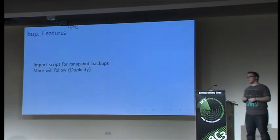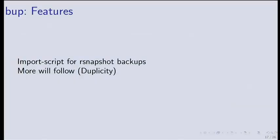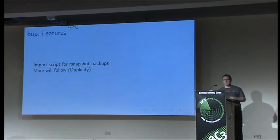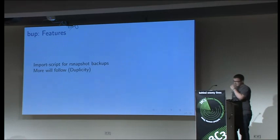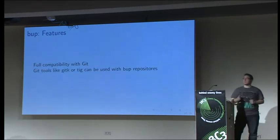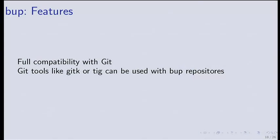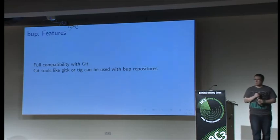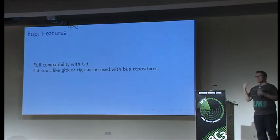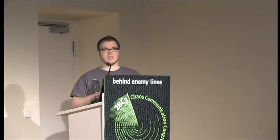We have an import script for rsnapshot. If you're using rsnapshot now and want to switch to BAP, there's a script that not only saves your rsnapshot tree but creates commits with the correct timestamps. A duplicity importer may follow. We are fully compatible with Git — you can use Git binaries to access data in a BAP backup, view backups with gitk, gitx, tig, etc. The project is LGPL.